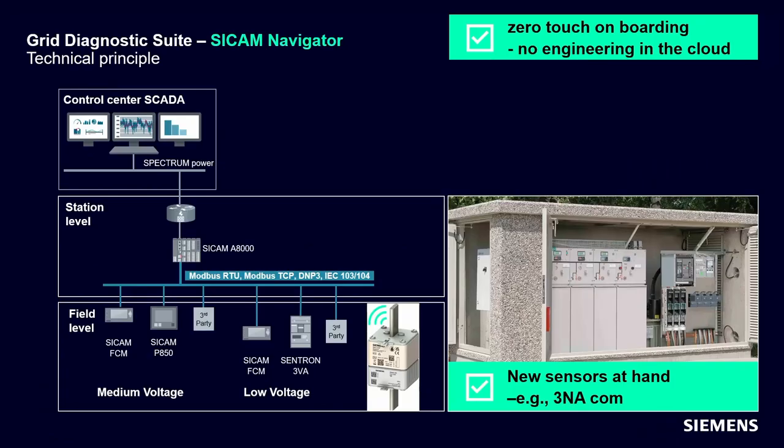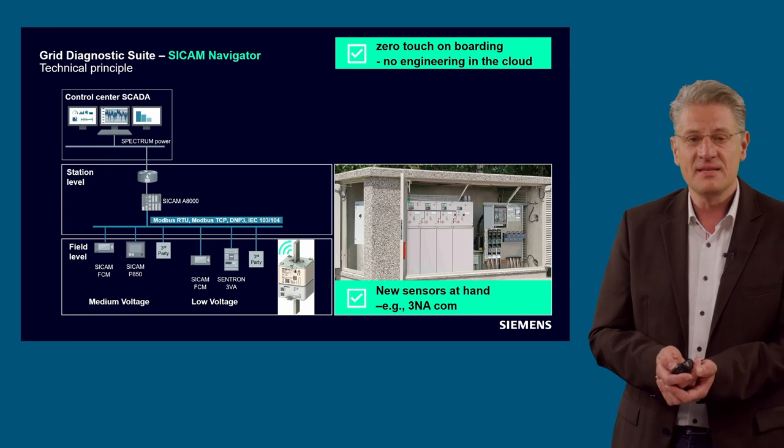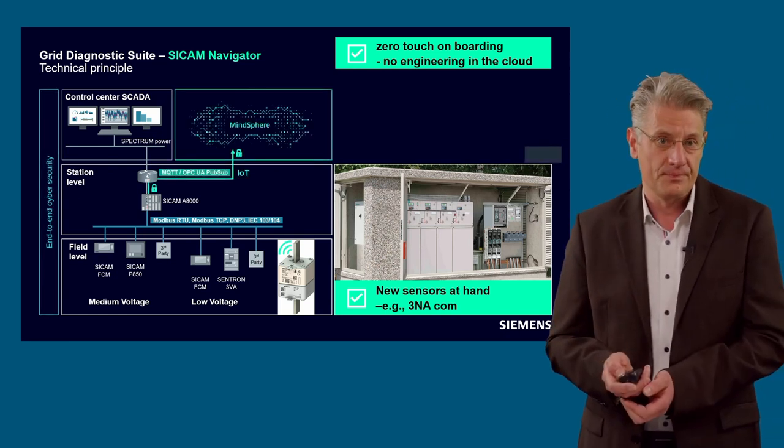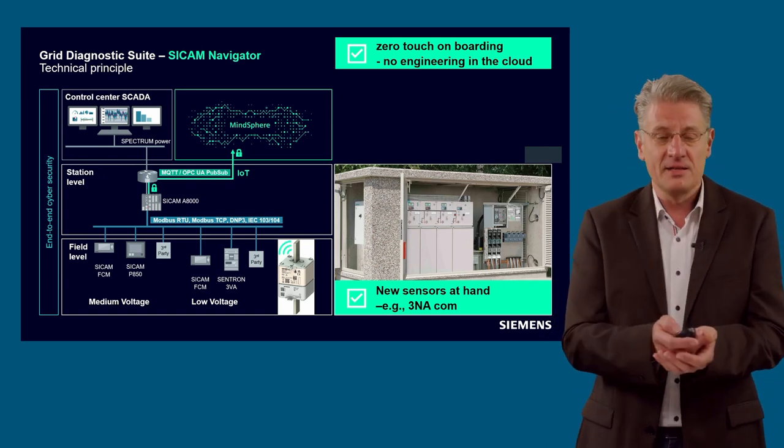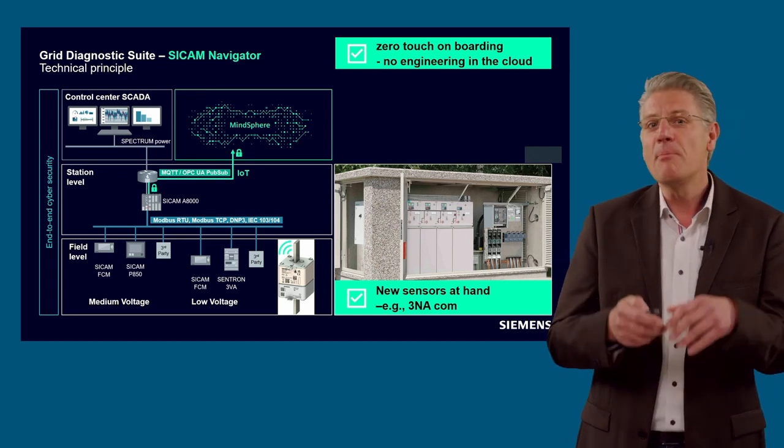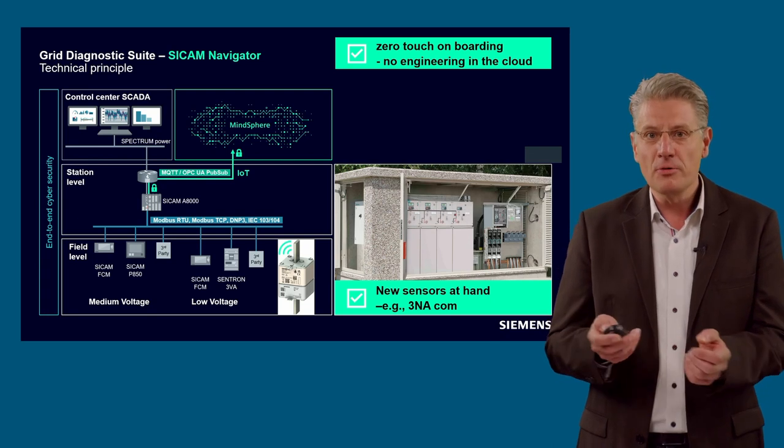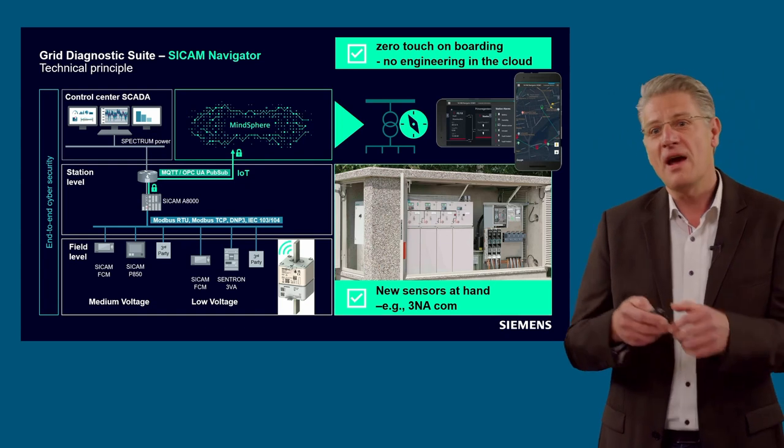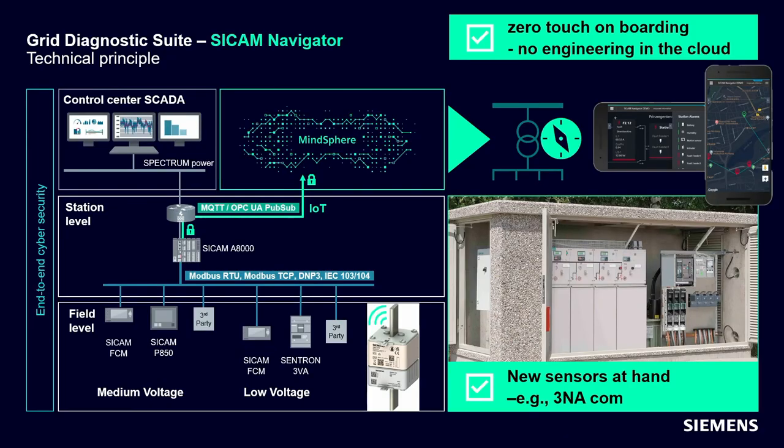One way forward is the SICAM diagnostic suite of the SICAM Navigator. We need a solution that's easy to connect inside the grid. On the left-hand side, we see the communication architecture at station levels with different devices connected to the field level. Via our SICAM A8000, data is brought to the cloud. New elements like the 3-NA-COM fuses can connect to SICAM A8000 and provide data to MindSphere with zero touch onboarding and no engineering in the cloud.